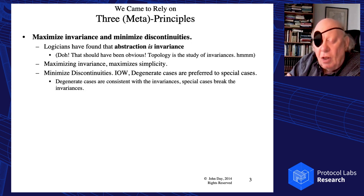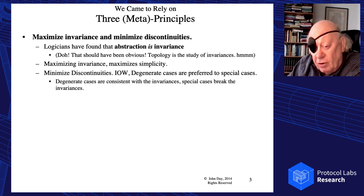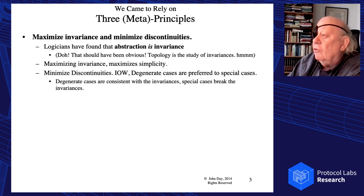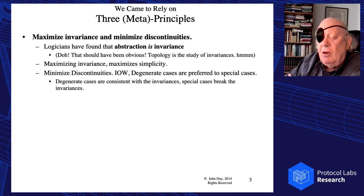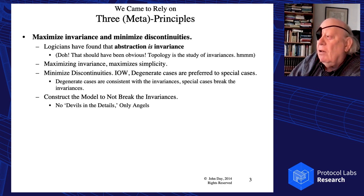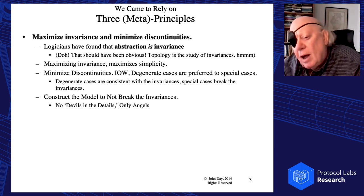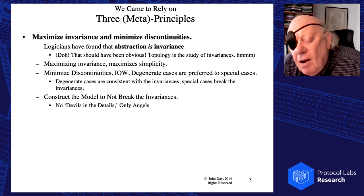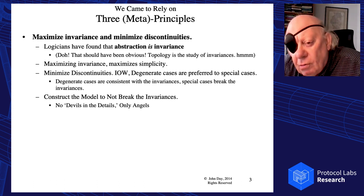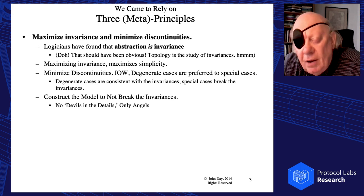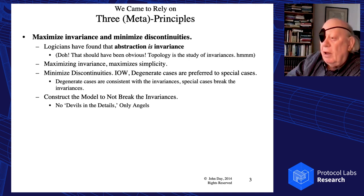Our rule became: maximize invariance and minimize the discontinuities. Maximizing invariance maximizes simplicity. Minimizing the discontinuities — in other words, preferring general cases to special cases — essentially says we're staying within the invariances. And then we construct the model to not break the invariances. When we do that, quite interestingly, we don't find devils in the details — we find angels. We pick up a topic we haven't looked at before and find the model already tells us how to do it.